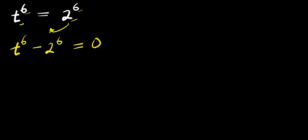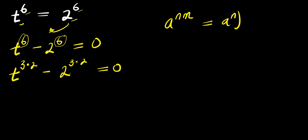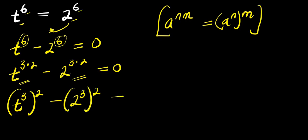Now let's express this 6 as the product of 3 and 2, and also express this as the product of 3 and 2, so we can make use of difference of two squares. So we are going to have t to the power of 3 times 2, minus 2 to the power of 3 times 2, equals 0. If you have a to the power of n times n, this equals a to the power of n, to the power of n. So applying this identity, you get t to the power of 3, raised to the power of 2, minus 2 to the power of 3, raised to the power of 2, equals 0.